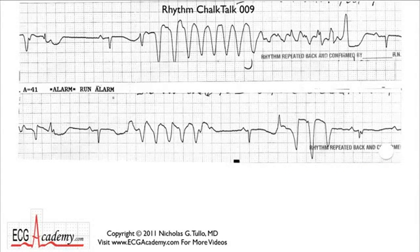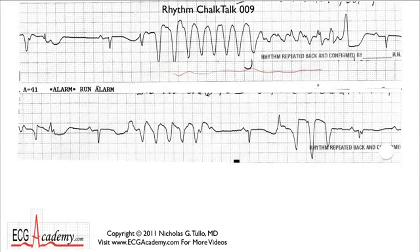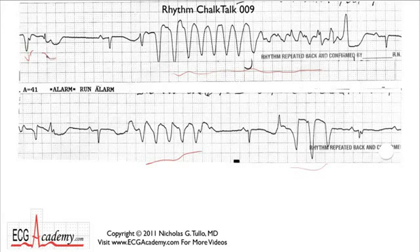It is pretty bizarre — that's why I didn't make it basic. It's an intermediate tracing. When you first look at it, you kind of have to look at the forest because there's almost no pattern. You see all these really weird-looking beats, and it does kind of give a sense of artifact. But let's look more carefully. These first couple of beats look wide and bizarre — they could be ventricular beats — but then we find a normal-looking beat, which gives us somewhere to start.